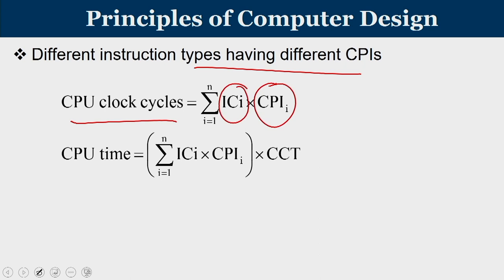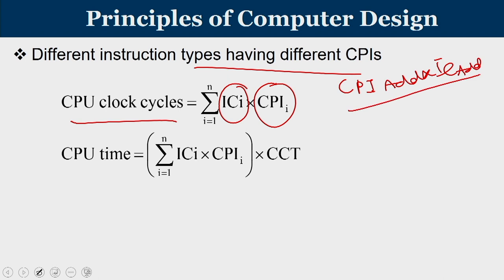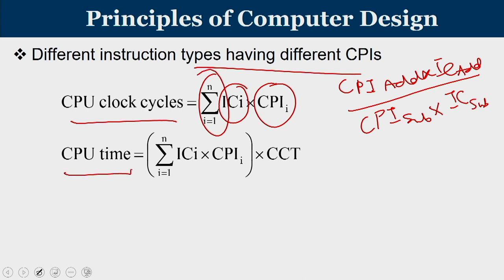Since different instructions have different CPIs, the total clock cycles needed in the CPU is computed as the summation of instruction count × CPI for each instruction type. For example, the total cycles for ADD operations is the count of ADD instructions multiplied by the average CPI of ADD. You do this summation across all instruction types, and CPU time is then total average clock cycles multiplied by clock cycle time.